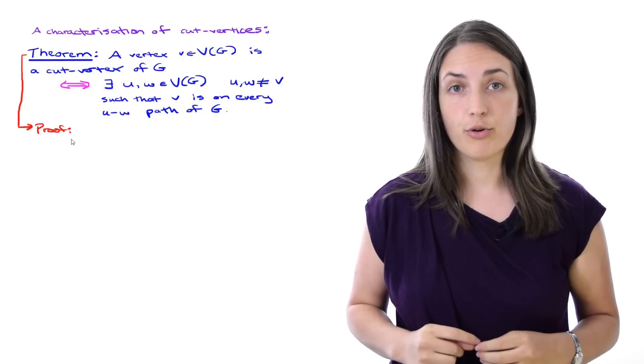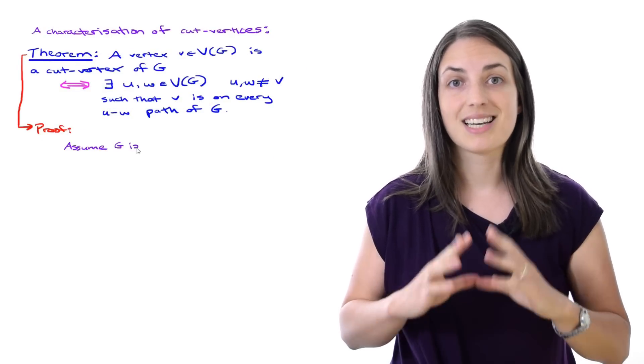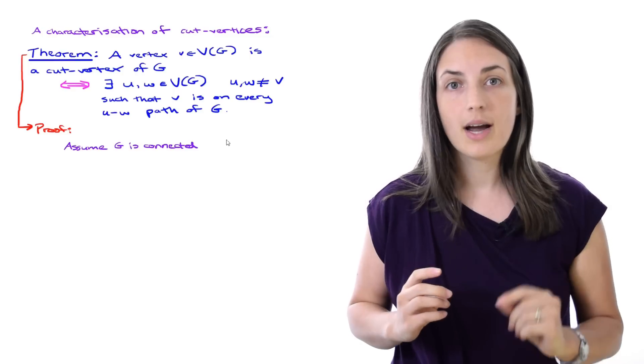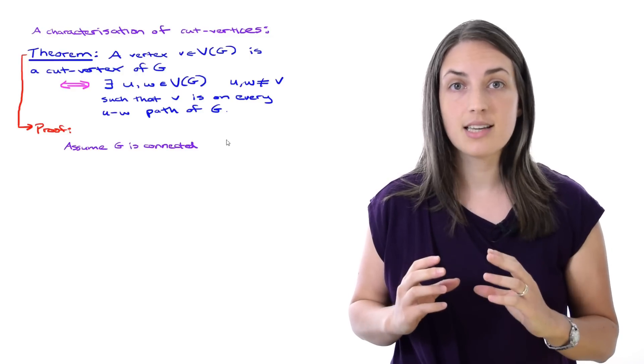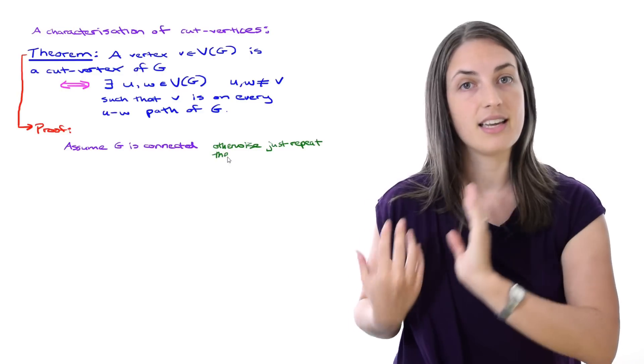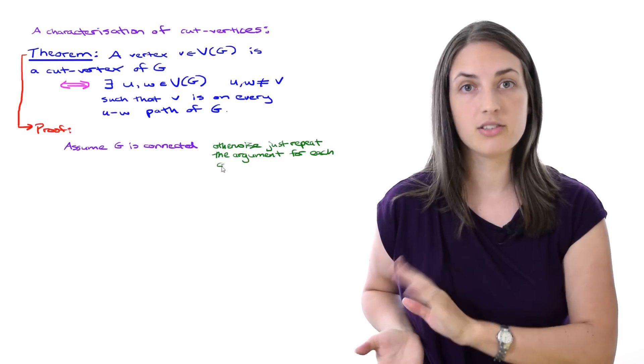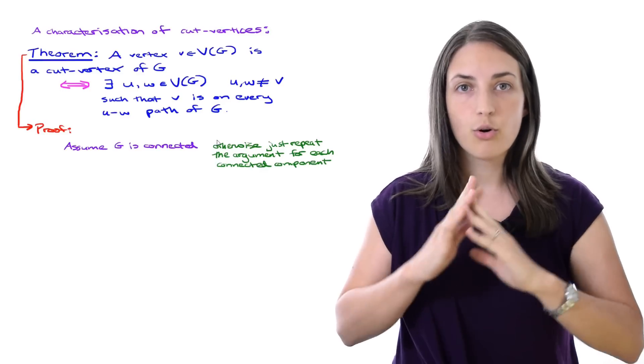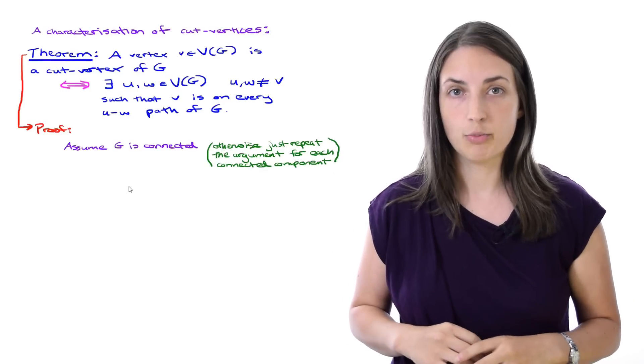First of all, in our proof we are going to assume that G is a connected graph. The reason we can do this is because if G is disconnected, we look at each of the connected components in turn and run the exact argument on each component and you'll get the same result. Overall in this proof we're assuming G is connected.